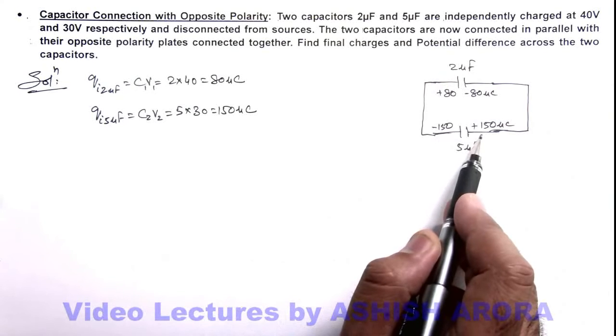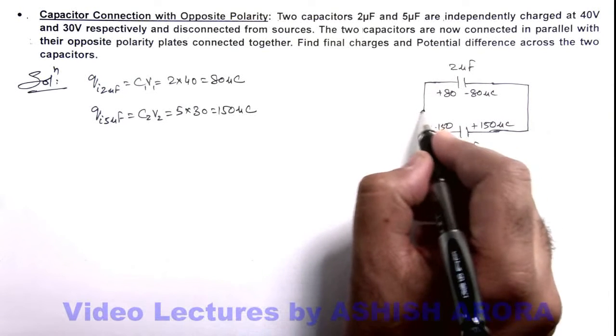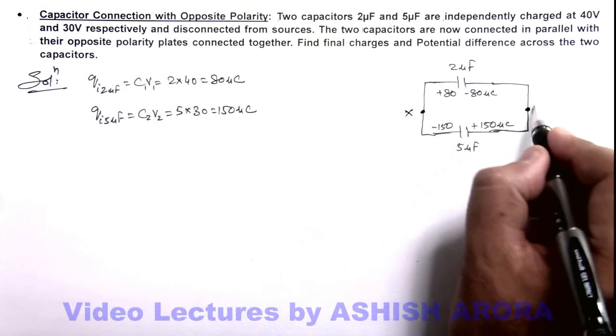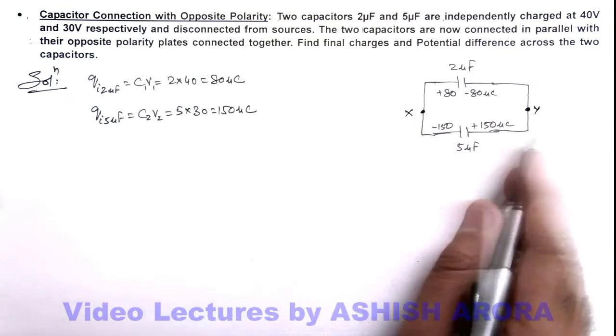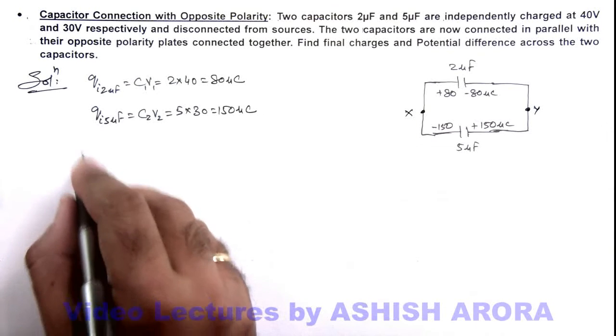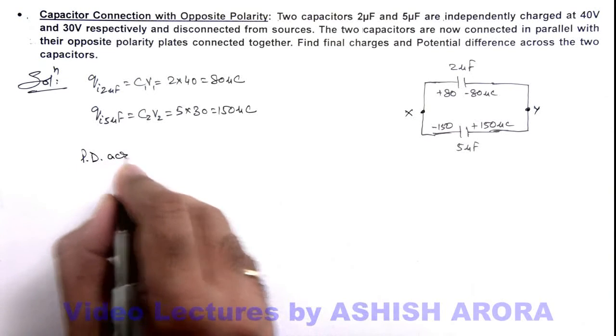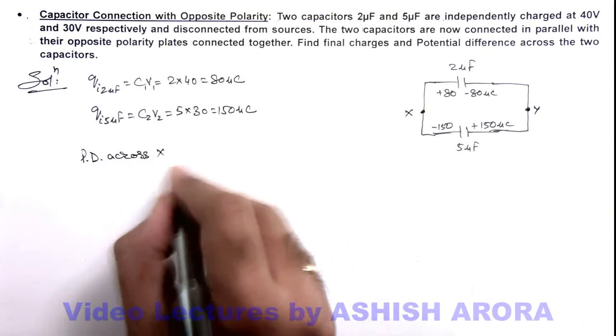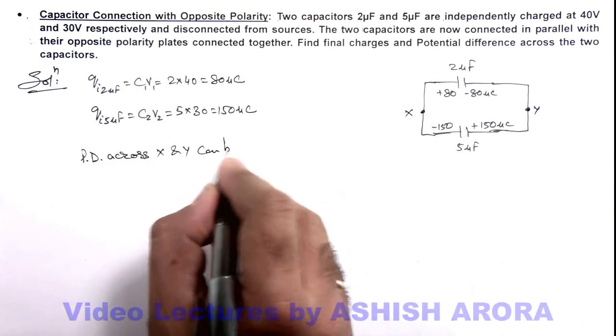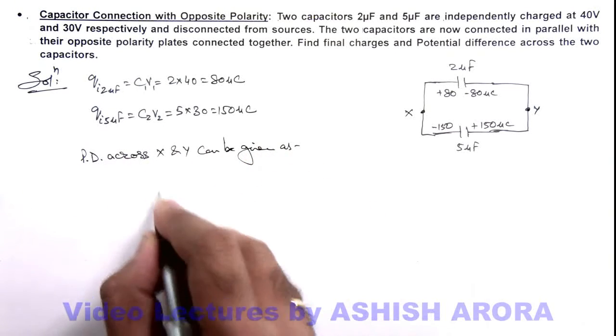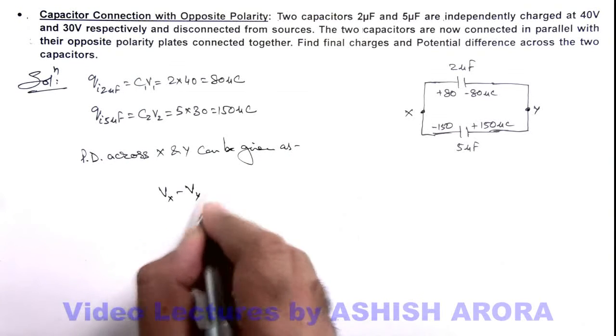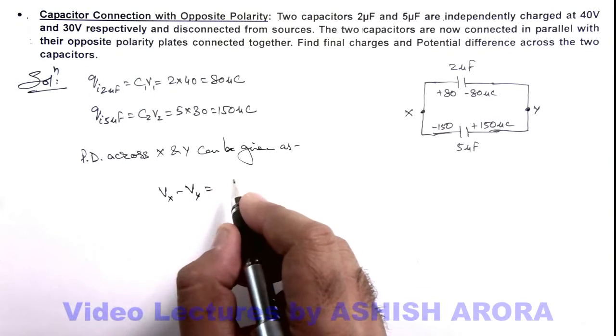We can say across terminals X and Y, the potential difference can be directly given as: VX minus VY equals Q by C.